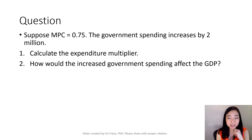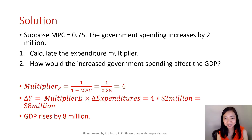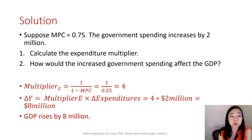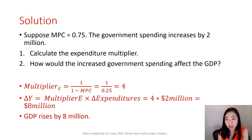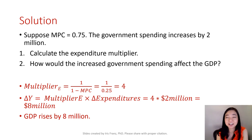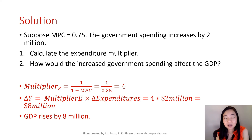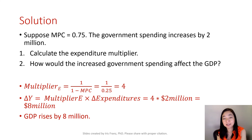Now suppose you are done — we can compare our answers. Here is the solution. We know the multiplier is equal to 1 divided by MPS, and our MPC is 0.75. So our MPS is equal to 1 minus 0.75, which gives you 0.25. And as a result, your multiplier is equal to 1 divided by 0.25, which gives you 4. Now your government spending increases by $2 million, therefore that's going to increase our GDP — by how much? By multiplier times the change in expenditure: 4 times $2 million equals $8 million.